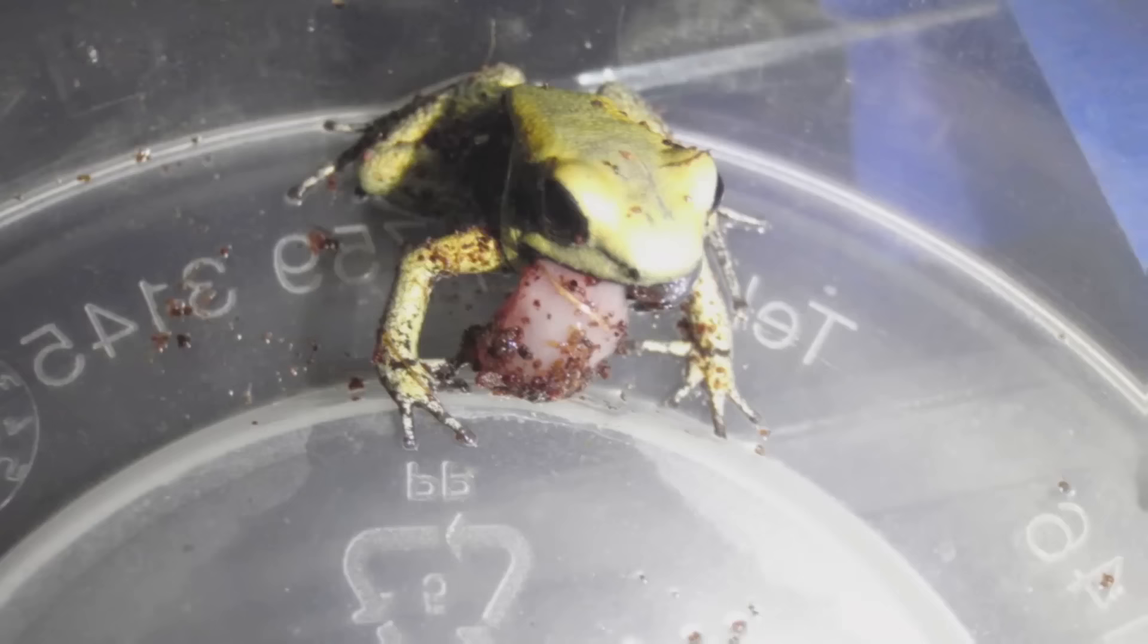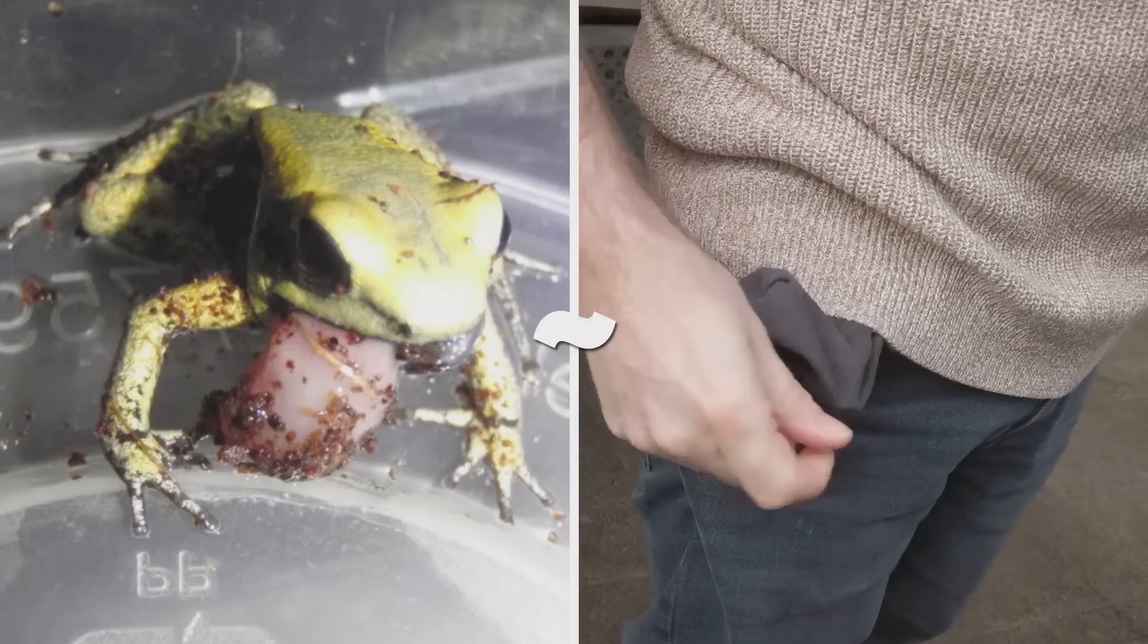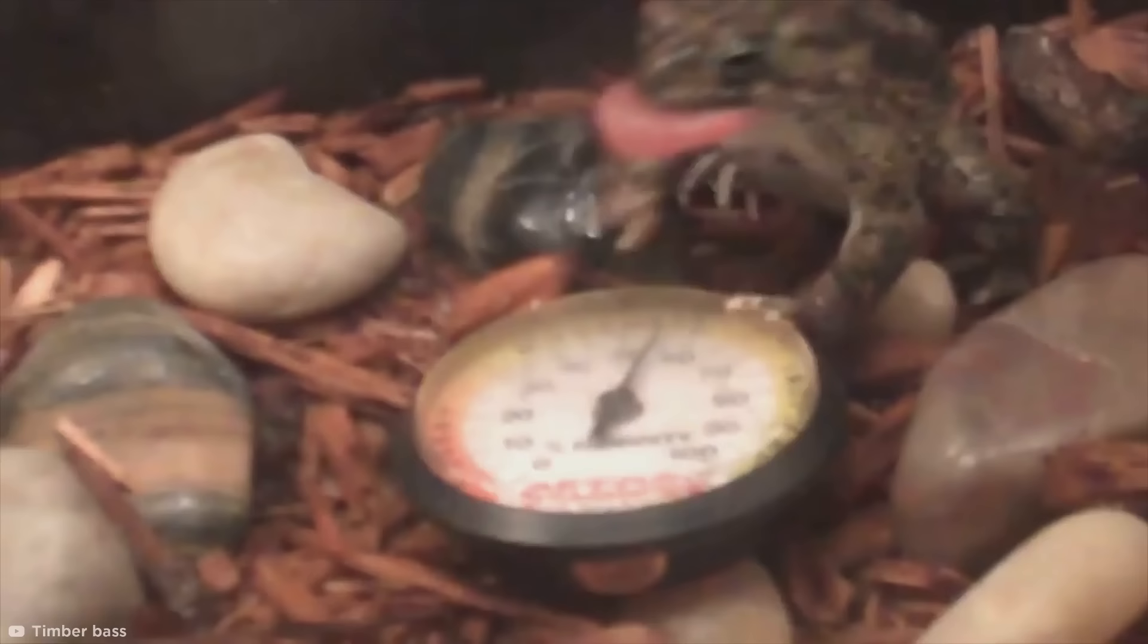The process is called full gastric eversion, and it basically works the same way as dumping out your pockets. Once it has thrown up its stomach, which is now hanging out of its mouth, the frog will use its front feet to wipe it clean and remove any stray bits of food. Then it will pack the whole thing neatly back into its body, where it will remain until the next time the frog makes a mistake and eats something it shouldn't.